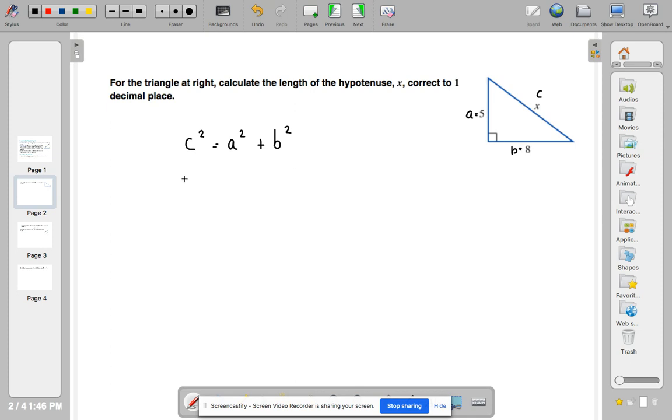So in that case, the missing side that we're after, which is X, X squared will equal 5 squared plus 8 squared. X squared will equal 25 plus 64. X squared will equal 89. X will therefore be the square root of 89.